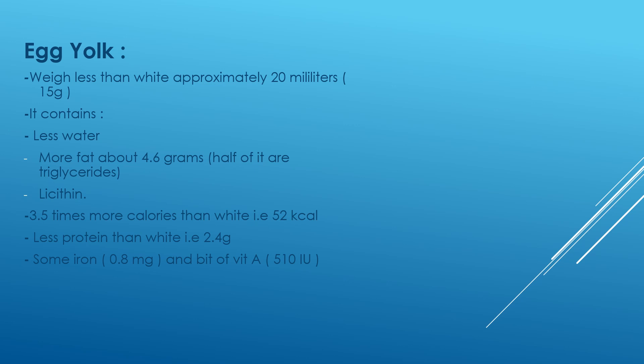The yolk weighs less than the white, approximately 20 milliliters. It contains less water and more fat — about 4.6 grams — and half of the fat is triglycerides. It does have lecithin, which has good emulsifying qualities. It is 3.5 times more calories than the white, that is 52 kilocalories in one medium egg yolk. It has less protein than the white, at 2.4 grams, and it does have some iron and a bit of vitamin A.